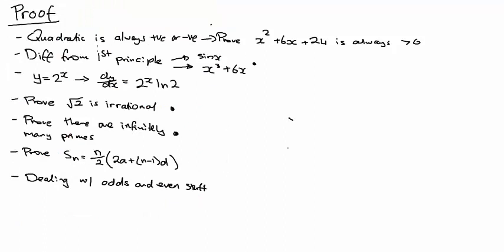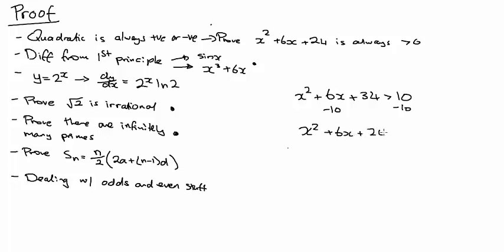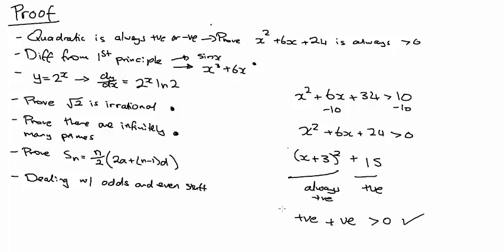The first one: prove that a quadratic is always positive or negative. They won't word it like that — it'll be something like 'prove that for all x, this expression is greater than 10.' The first thing you always do is rearrange it into a quadratic, then complete the square. So you'd get something like a completed square form plus 15, and since a squared term is always positive and 15 is positive, you've got positive plus positive, so it's always greater than or equal to 10.